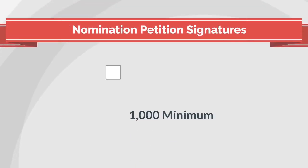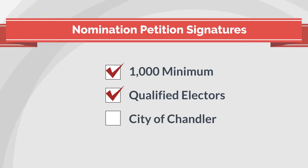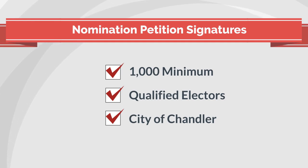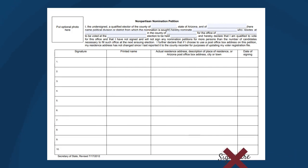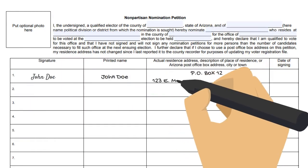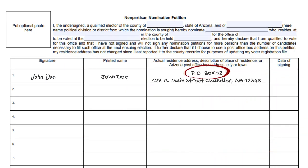Nomination petitions must contain at least 1,000 valid signatures, and only qualified electors of the City of Chandler are allowed to sign. No more than 10 signatures per petition page are allowed. Signatures placed in the margins will not be accepted. There must be a complete address listed. PO boxes are acceptable in the address field.